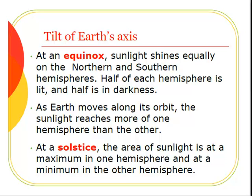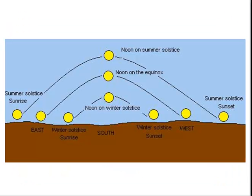At an equinox, sunlight shines equally — hence the word equinox — on the Northern and Southern Hemispheres. Half of each hemisphere is lit and half is in darkness. As Earth moves along its orbit, the sunlight reaches more of one hemisphere than the other. At a solstice, the area of sunlight is at a maximum in one hemisphere and at a minimum in the other hemisphere.